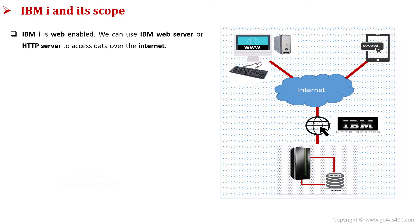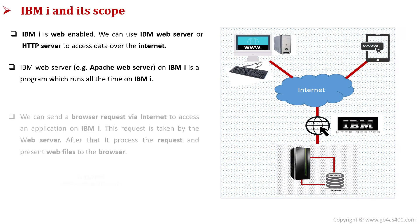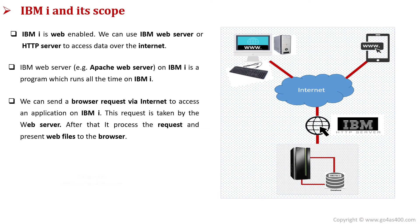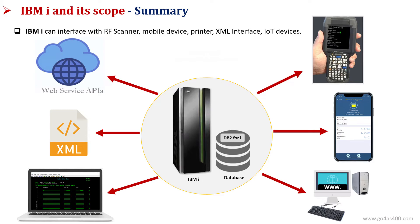IBM i is web enabled. We can use the IBM i web server or HTTP server to access data over the internet. The IBM i web server is a program which runs on the server all the time. We can send a browser request via the internet to access an application on IBM i. The request is taken by the web server, which processes it and then presents the web files to the browser. Hence, IBM i can be integrated with almost all devices, supports the World Wide Web, web services, Internet of Things, and Artificial Intelligence.